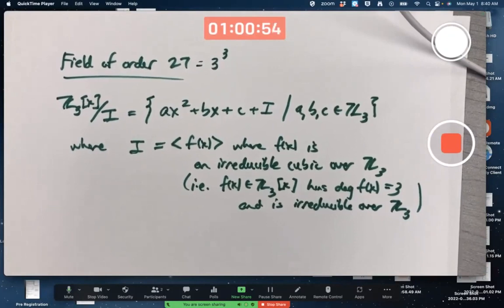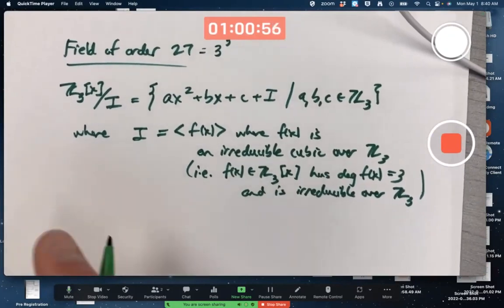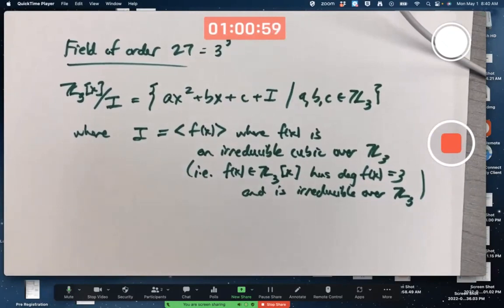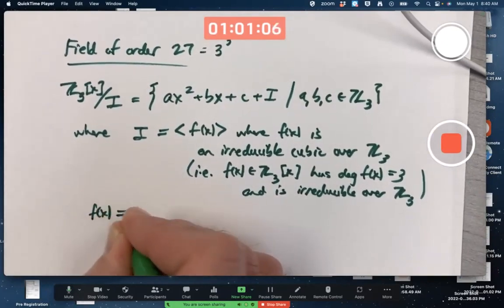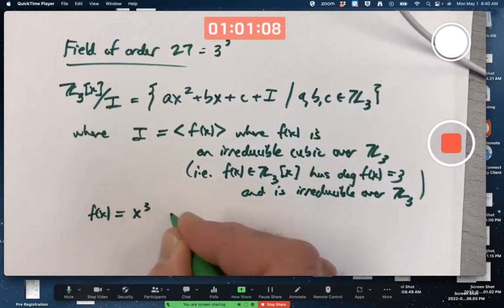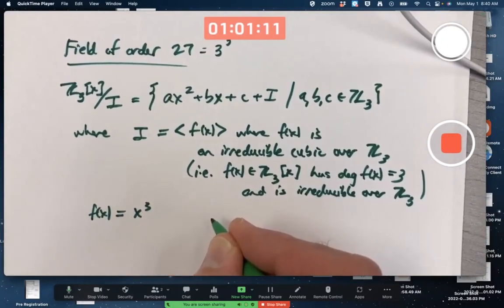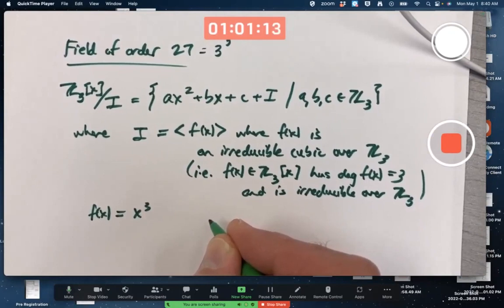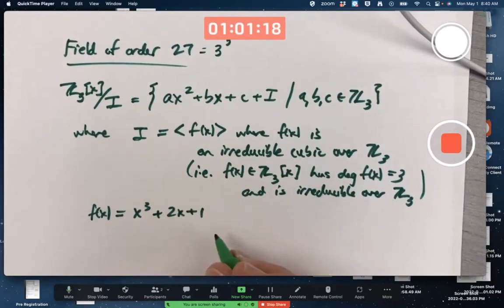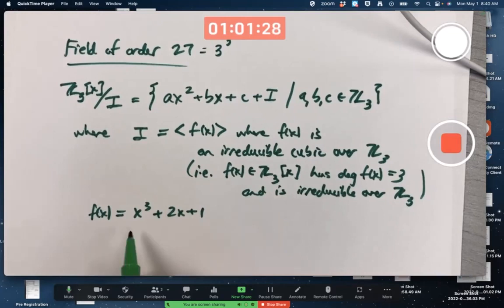So once again, it's trial and error. Find a cubic. That could take a long time, a little longer than the other one. Can I think of one really quick? x cubed plus x plus one doesn't work because one would be a root. Maybe 2x plus one. Zero is not a root, one is not a root, is two a root? Two cubed plus four is 12 plus one is 13, mod three is not zero. This looks like it would work.